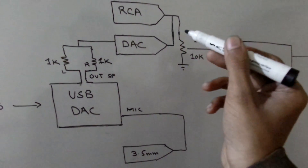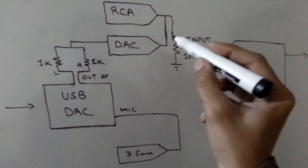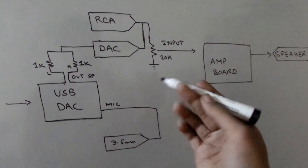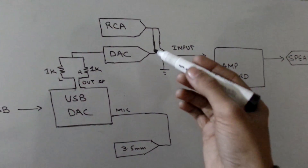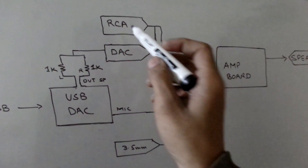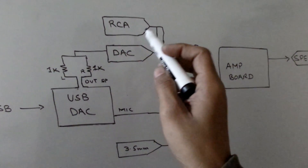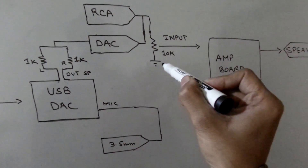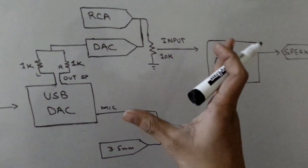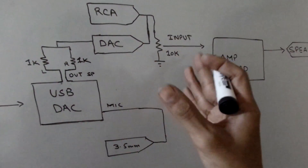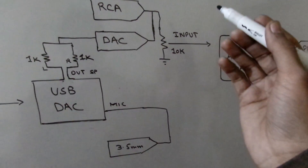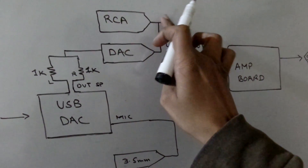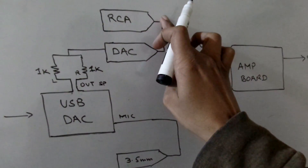Schematics of the amplifier and DAC board are given in the description of this video — you can have that. You can also perform switching between this RCA and DAC by using a toggle switch. Let's see how we can do that.